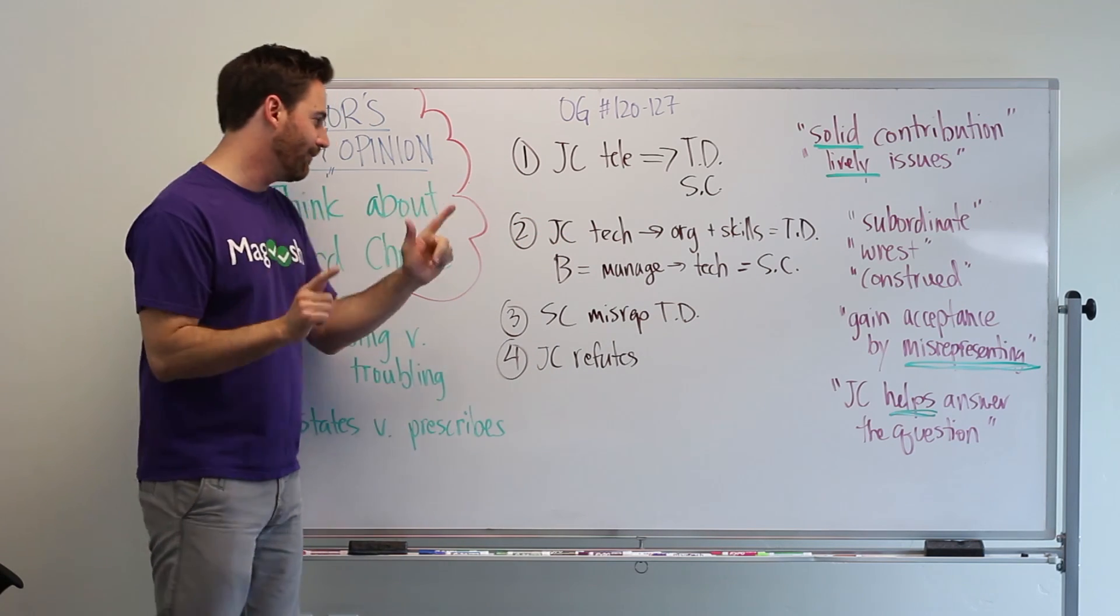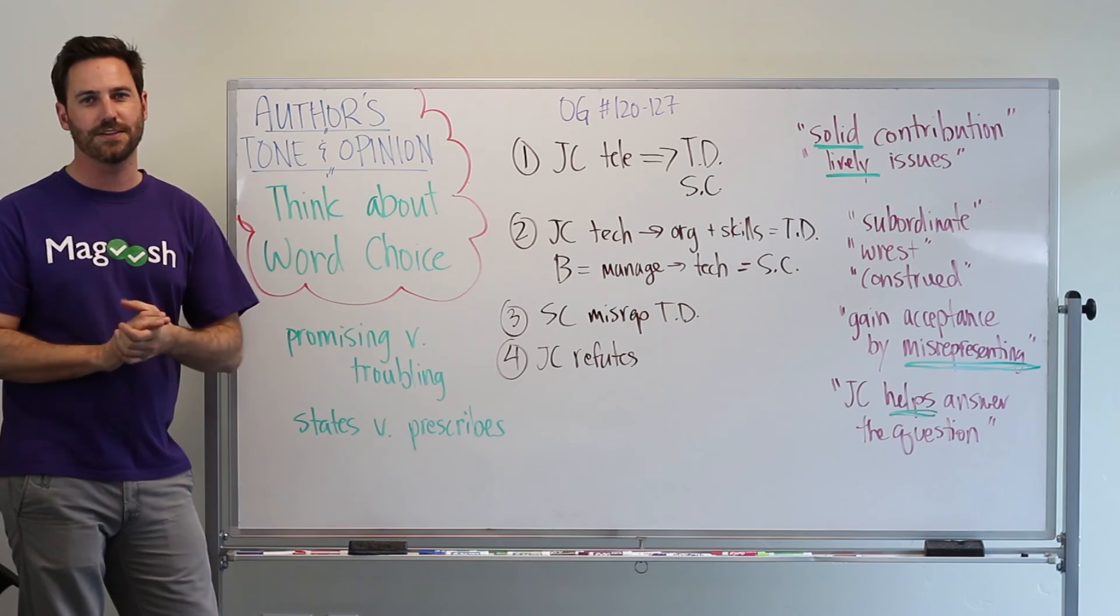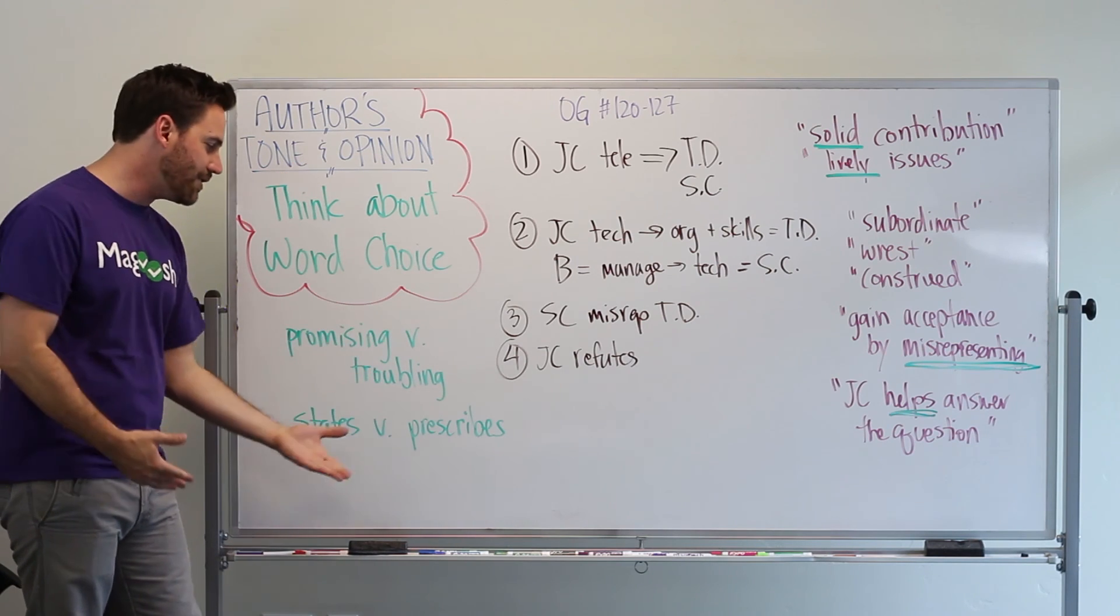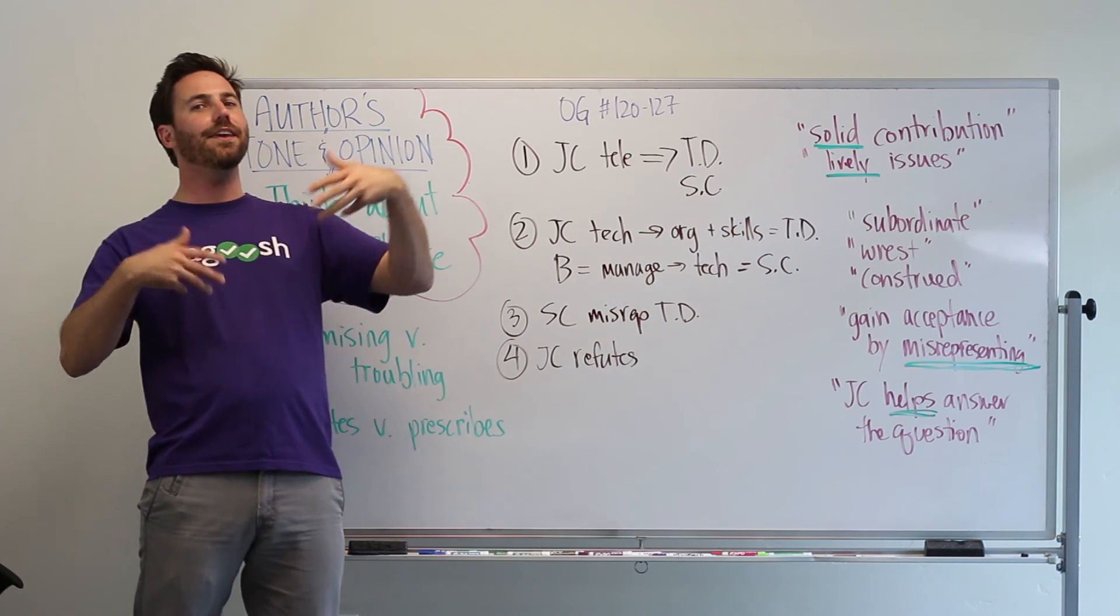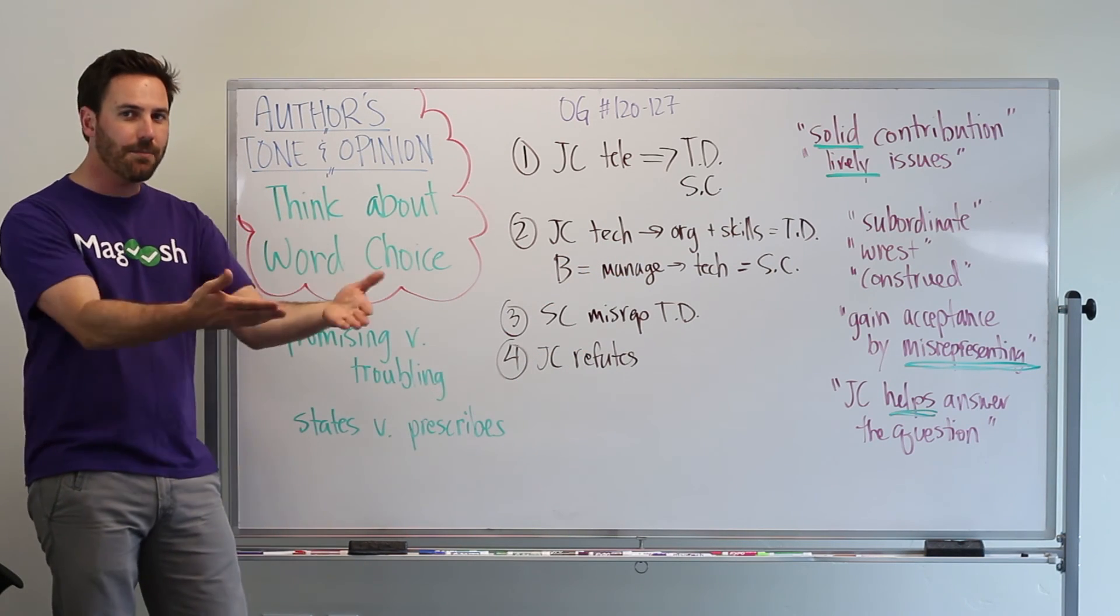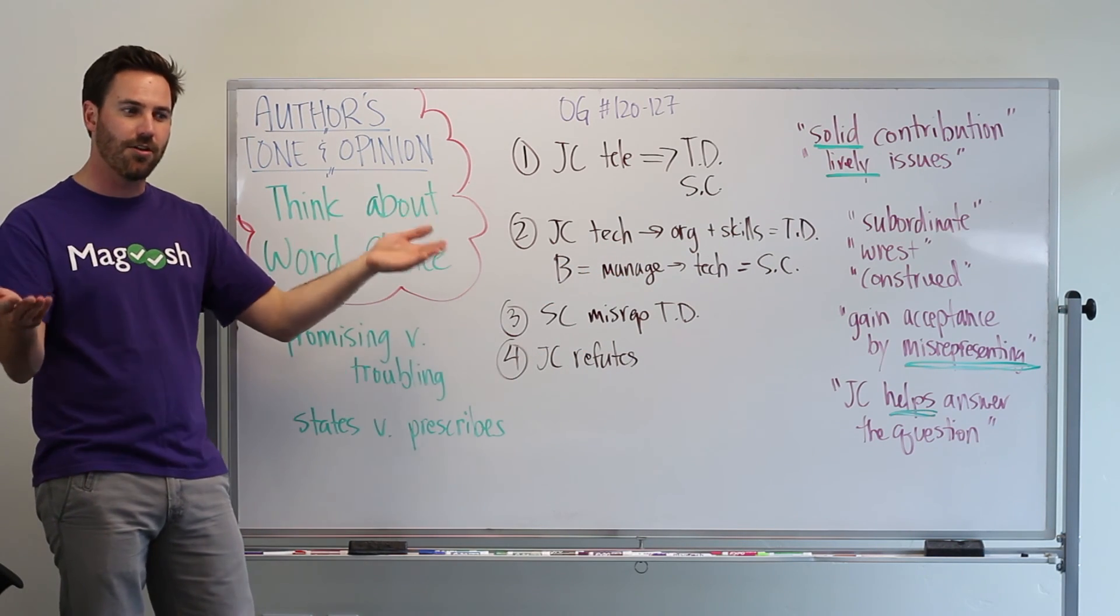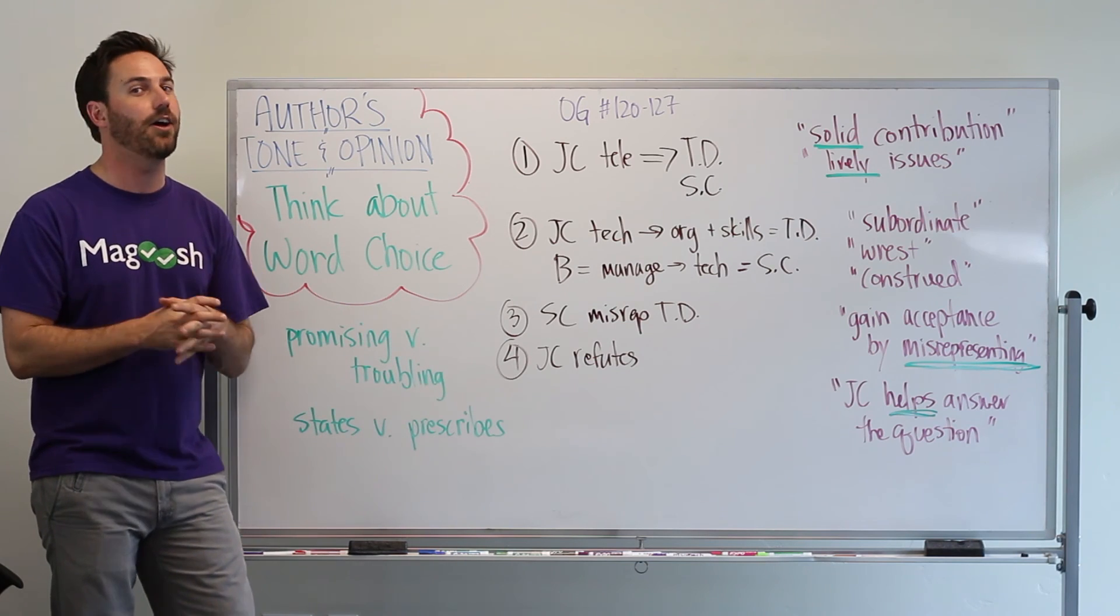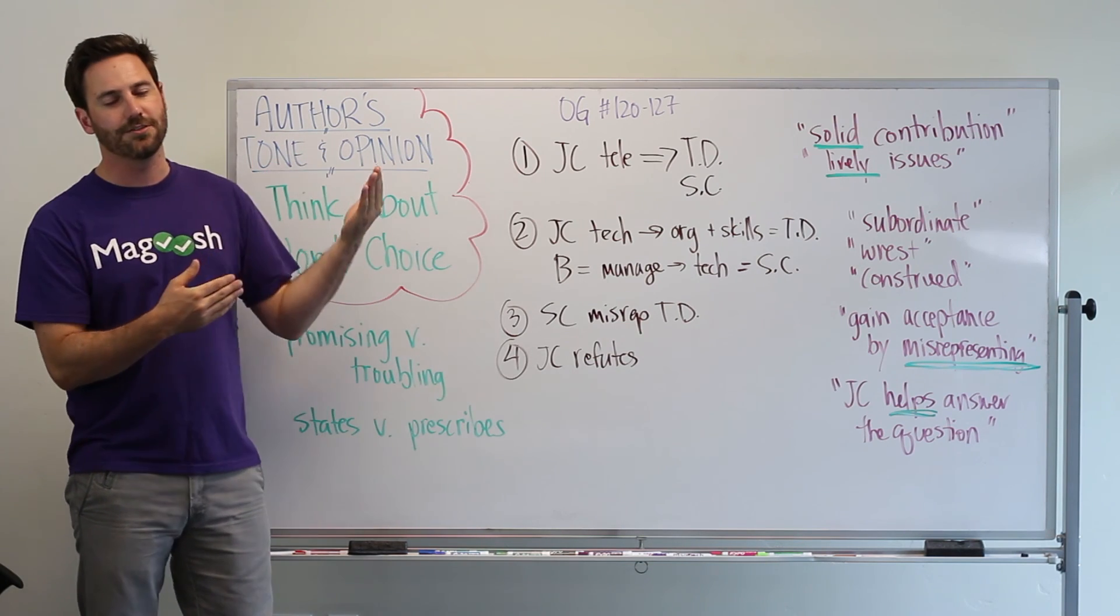So, remember, think about your word choice, think about the word choice that the author is making. This is hard to do because you have to think about all the other options that the author had, not the one that's right in front of you. Think about what you see in front of you and then think about all those other possibilities and that'll help you to get a sense of the author's tone and opinion.